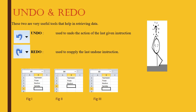Undo and redo — if you write four names and then think you don't need the last one, you click Undo or press Ctrl+Z, and the last entry will vanish. If you then realize you want it back, you press Redo and it comes back again. You can undo and redo as many times as you want until you get it right.